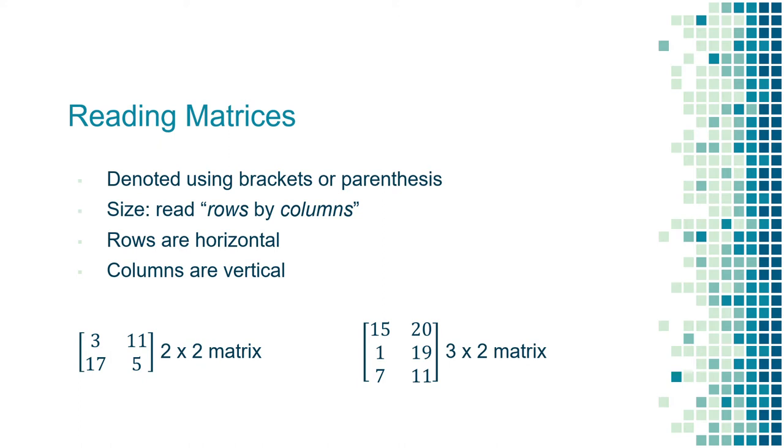The next thing that is important for you to know about matrices is how to know a matrix's size. When reading this size, we say rows by columns. Rows are the horizontal values and columns are the vertical values. So, for example, this first matrix is a two-by-two matrix because it has two rows and two columns.